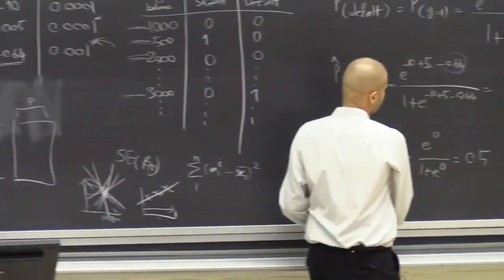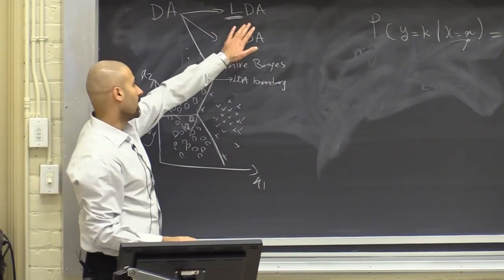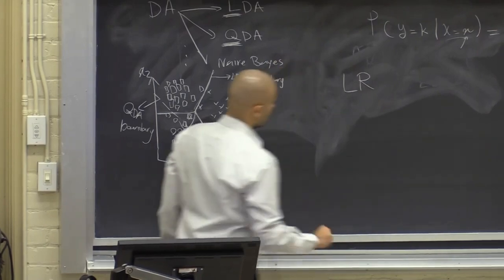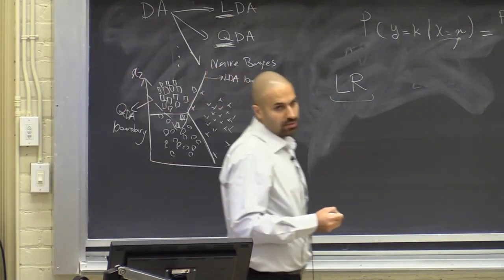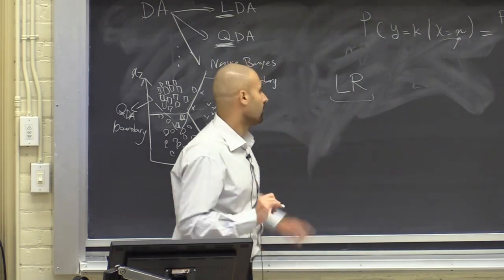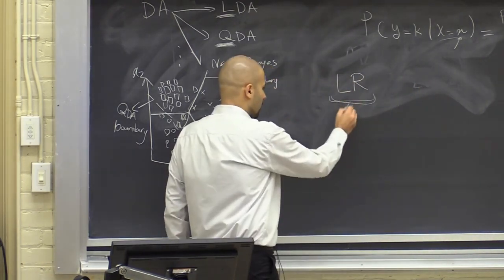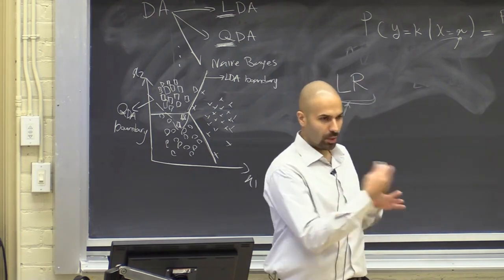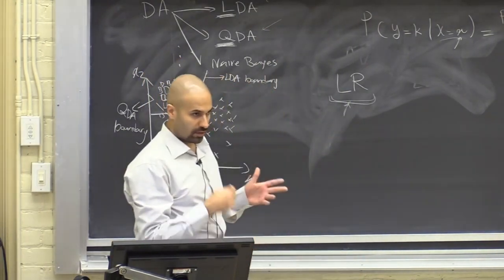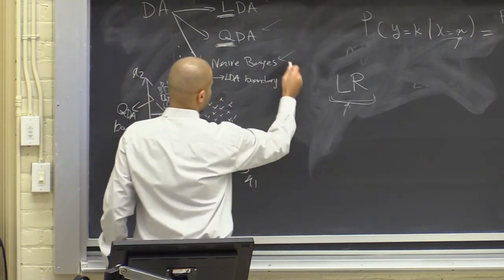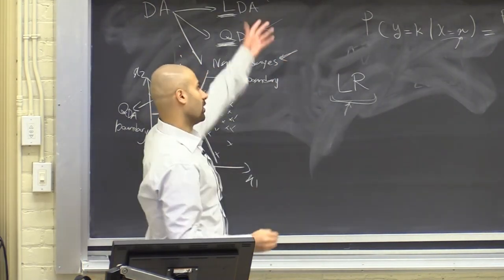Today we covered discriminant analysis in three flavors — LDA, QDA, and Naive Bayes — plus logistic regression. Logistic regression is the go-to method for binary classification but suffers from the curse of dimensionality when the number of predictors P is large, and collinearity can be an issue. LDA and QDA also suffer from high dimensionality. Naive Bayes handles dimensionality better and does well for predicting classes, but not probabilities. When P is large, use logistic regression with regularization (L1/L2 penalties) or Naive Bayes if only class labels are needed.